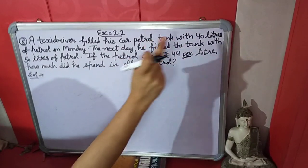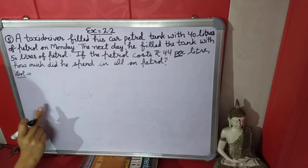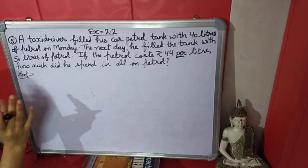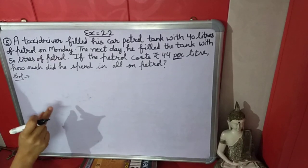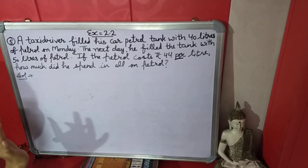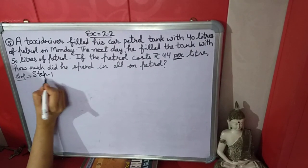All on means he is using petrol on Monday and next day. So we will solve this question in two steps. In the first step we will find the total quantity of petrol he is using in the car. In the second step we will find the cost of total petrol.